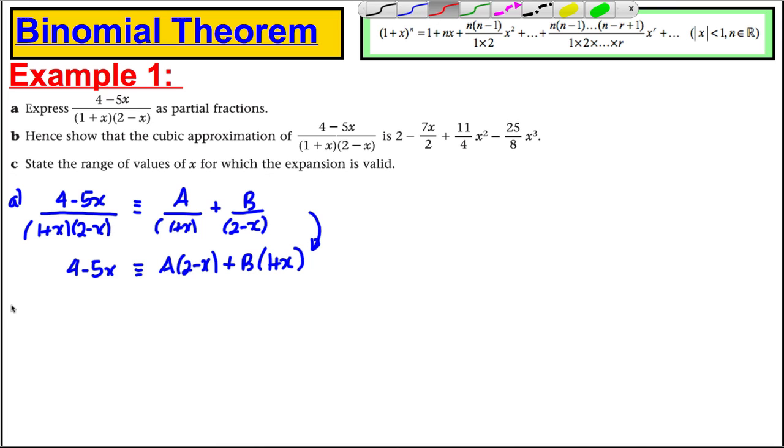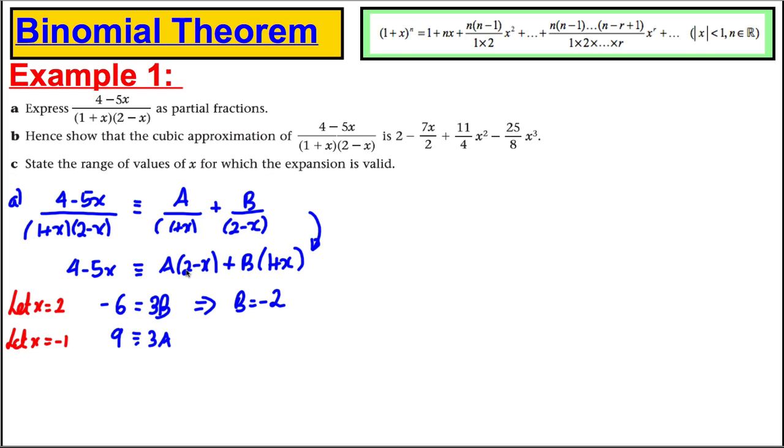Now, we use the substitution method. Let x equal 2. If x was 2, this here would be 4 subtract 10, which would be negative 6. We get A times 0, which disappears, and we get 3B. This tells us that B is clearly negative 2. Then, we'd use another substitution and let x equal negative 1. If we did that, we'd get 4 take away subtract minus 1, which would be 9, equals 3A, and therefore A is equal to 3.